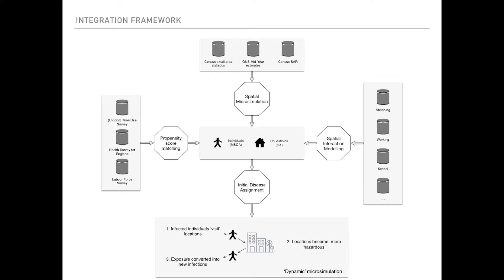Household data is aggregated up to MSOAs — Middle Super Output Areas, which are small areas. We integrate that underlying synthetic or virtual population with information from spatial interaction models: where people do their shopping, where they work, where they go to school, and how long they spend in those areas. Using micro-simulation, we have individual people moving around in those locations, and if they visit a location with the disease, they impart some hazard to that location. Other people visiting that location will then have a higher probability of contracting the disease if the hazard is great.